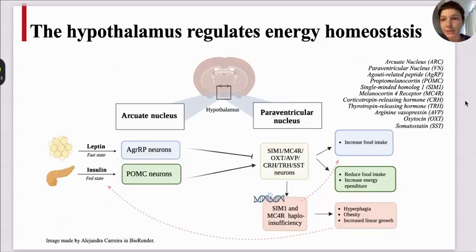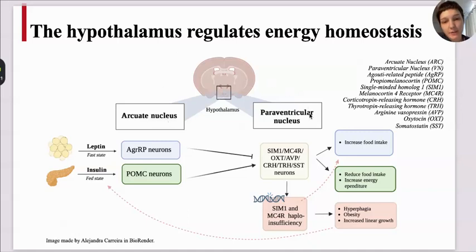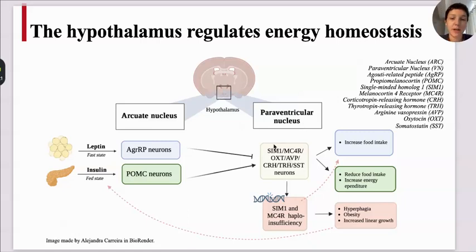The first thing we should know is the hypothalamus regulates energy homeostasis. Inside of the hypothalamus, we have two nuclei: the arcuate nucleus and the paraventricular nucleus. Inside the arcuate nucleus, we have the agouti-related protein neurons and the POMC neurons. And in the paraventricular nucleus, we have a group of neurons that express SIM-1, melanocortin-4 receptor, and other hormones such as oxytocin, vasopressin, and so on.